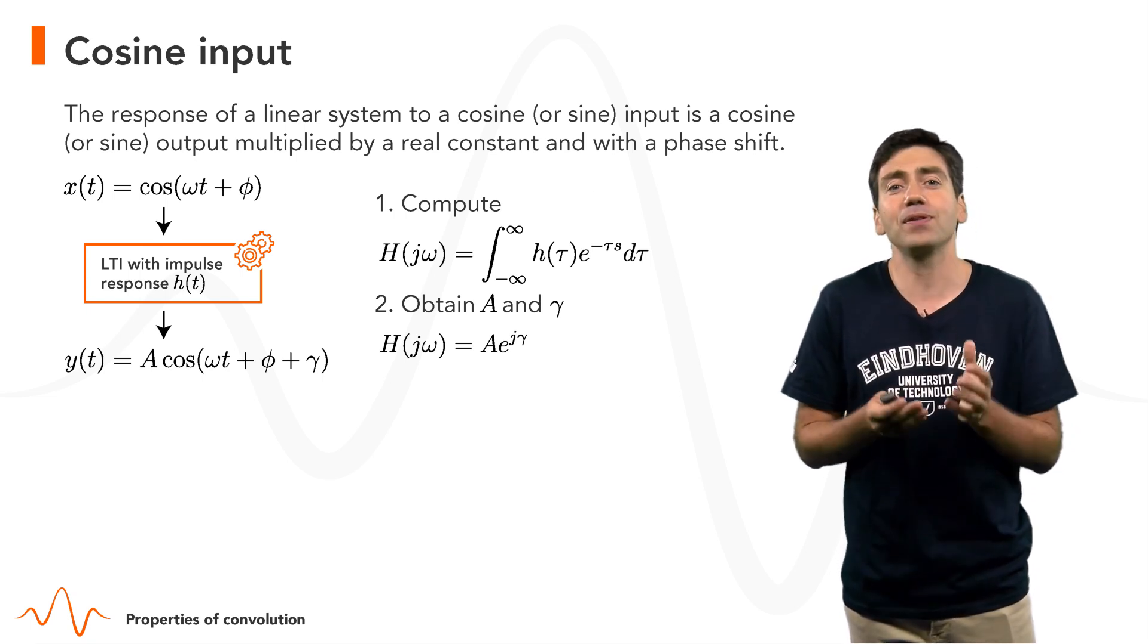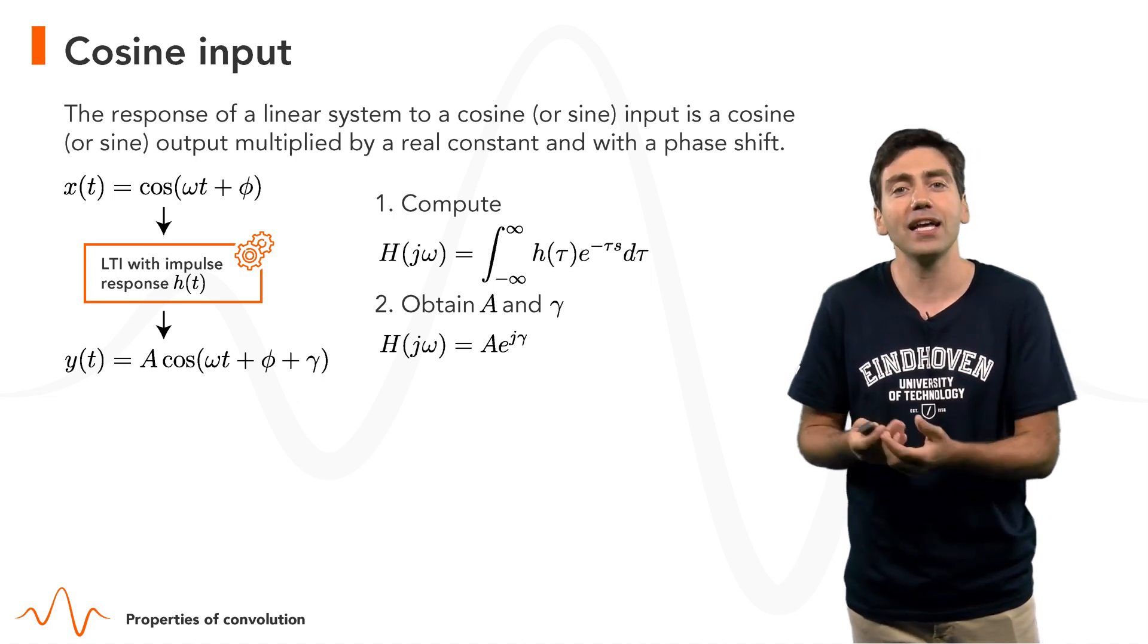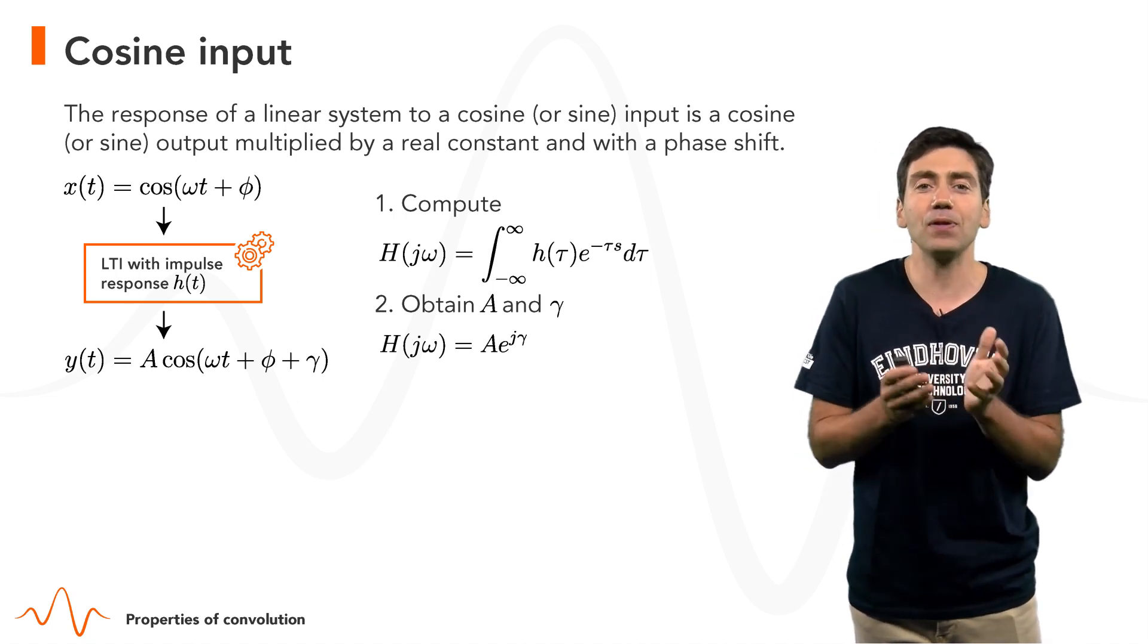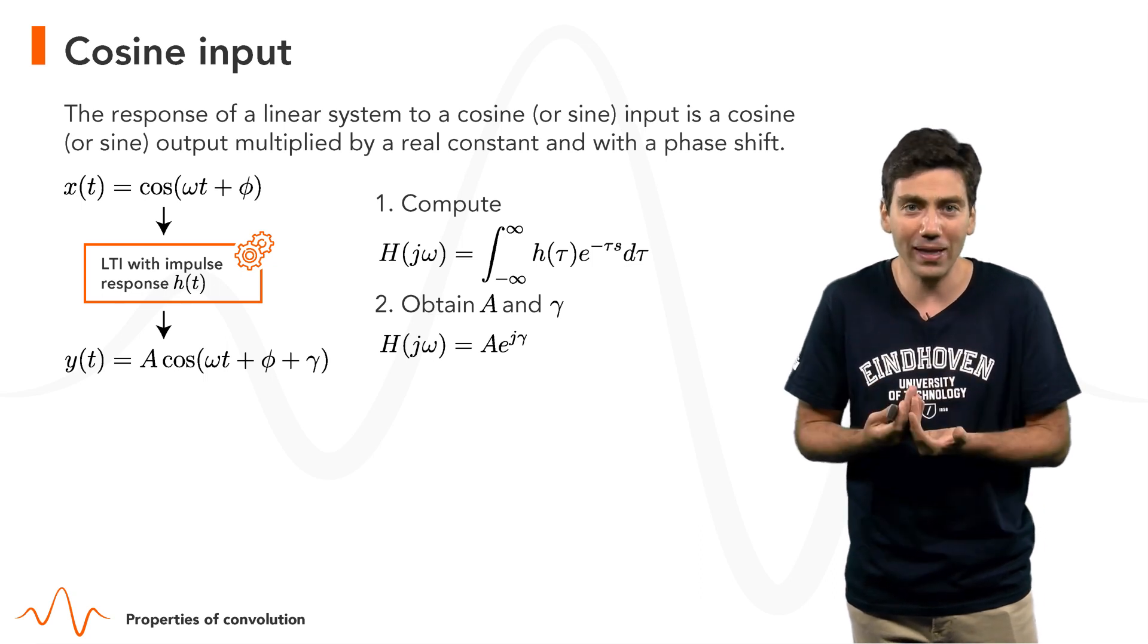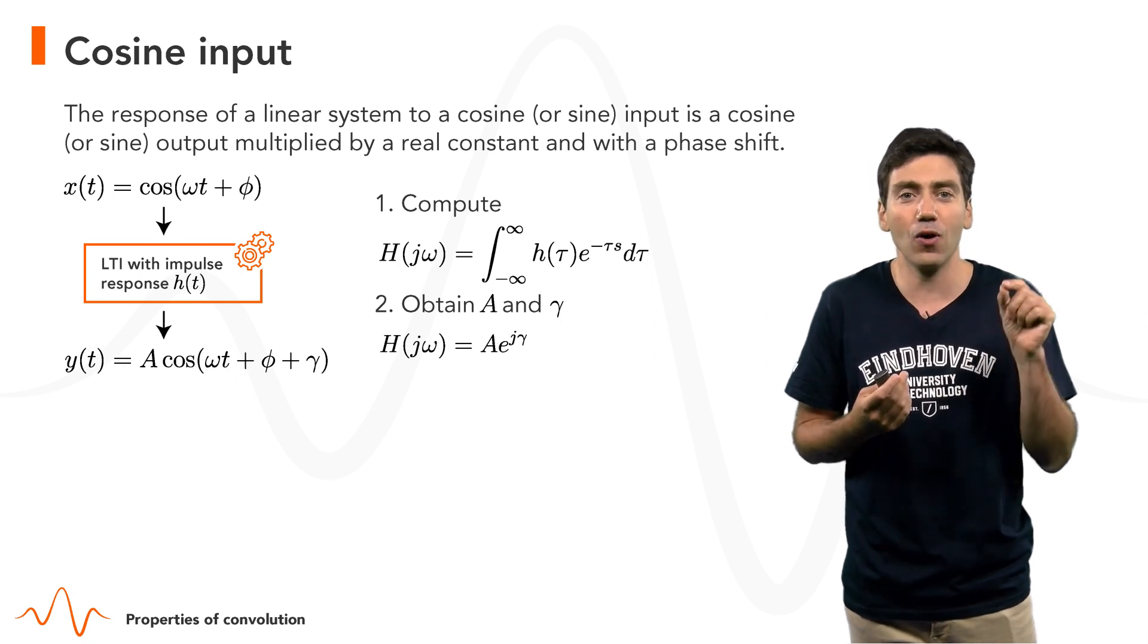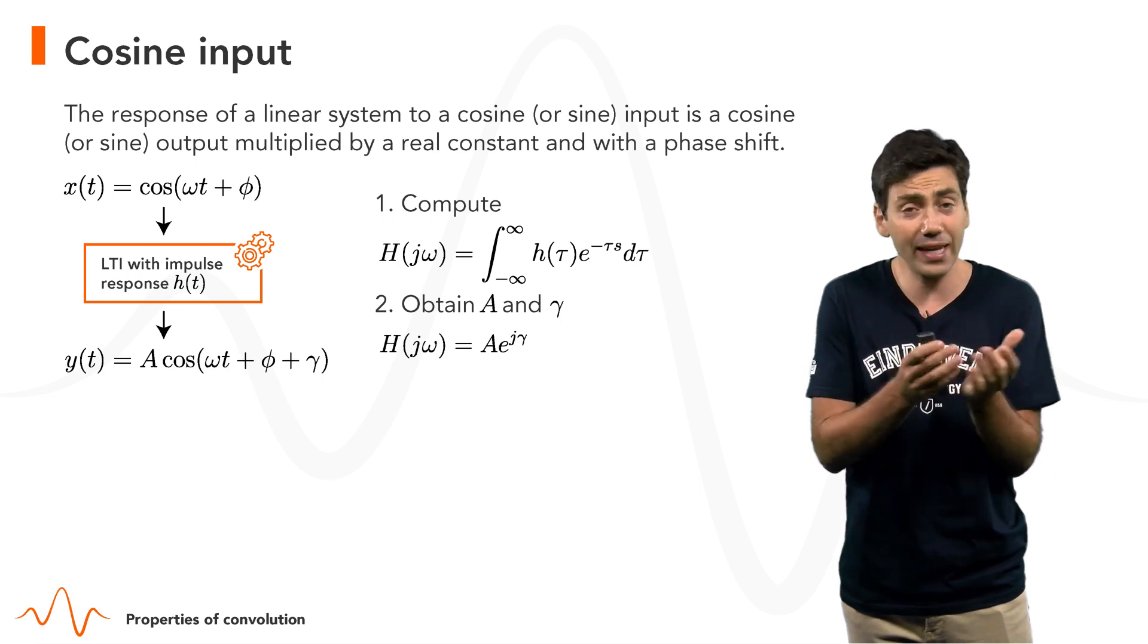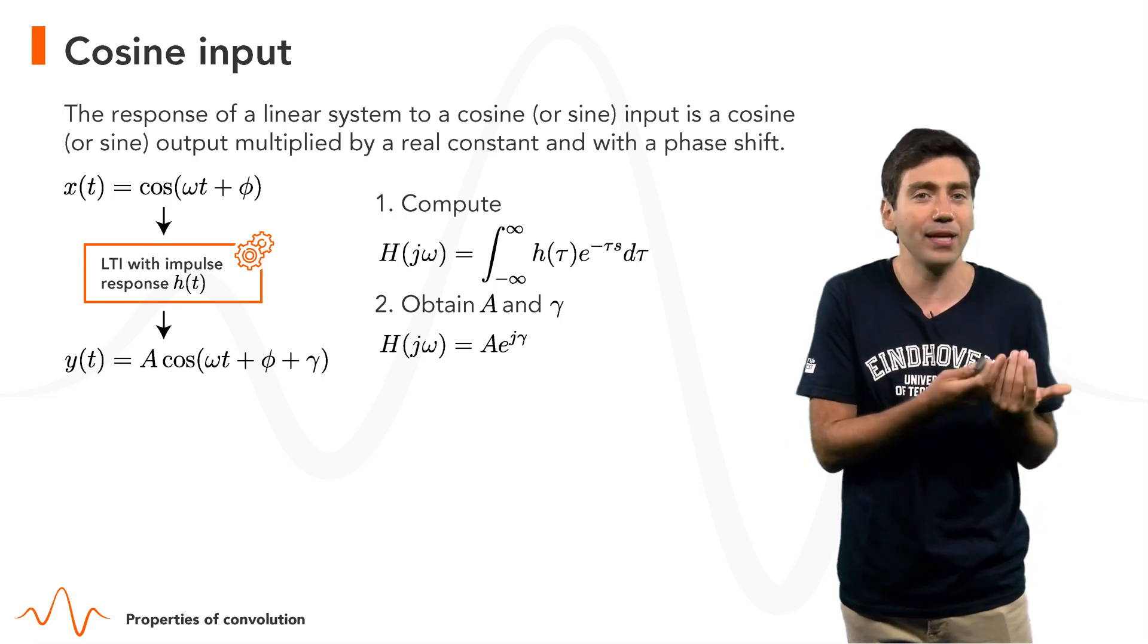The multiplicative factor for the amplitude and the additive factor for the phase are nothing more than the magnitude and phase of the complex number H(jω), where ω is the frequency of the input signal, either a cosine or a sine. And the cosine and the sine at the input can have a phase.